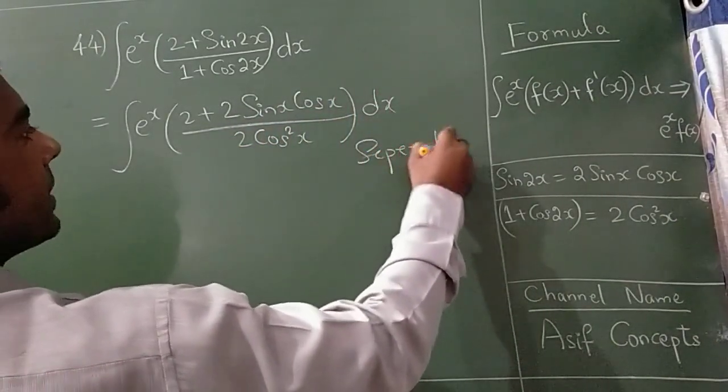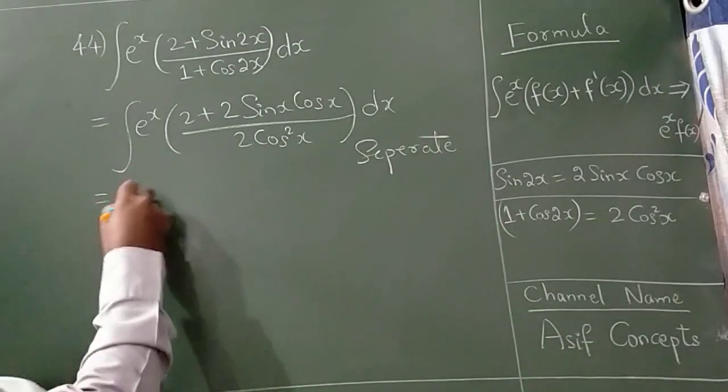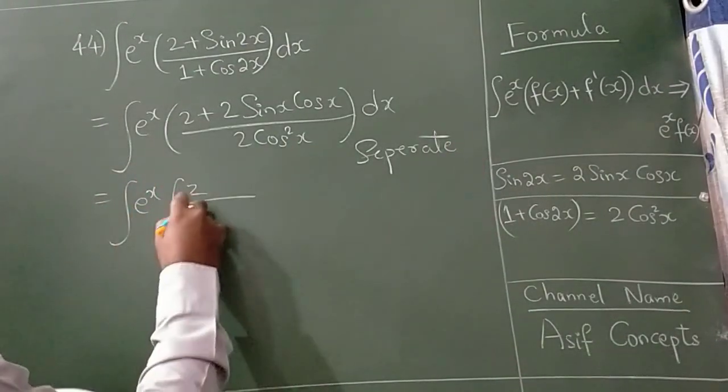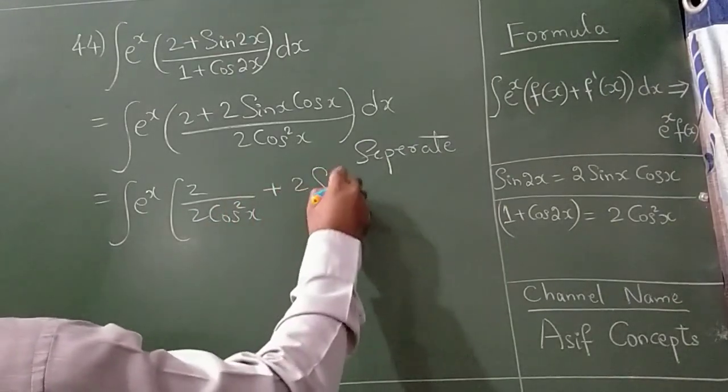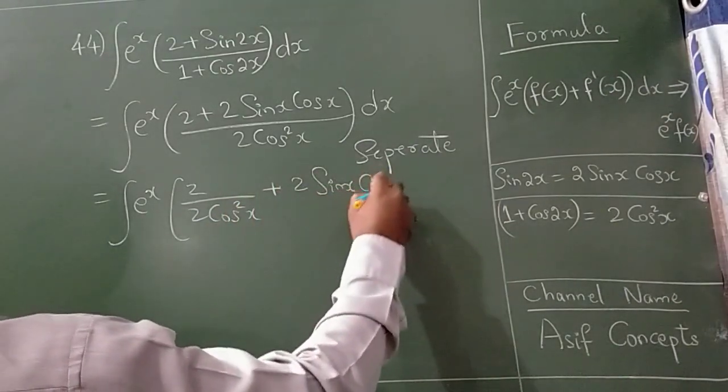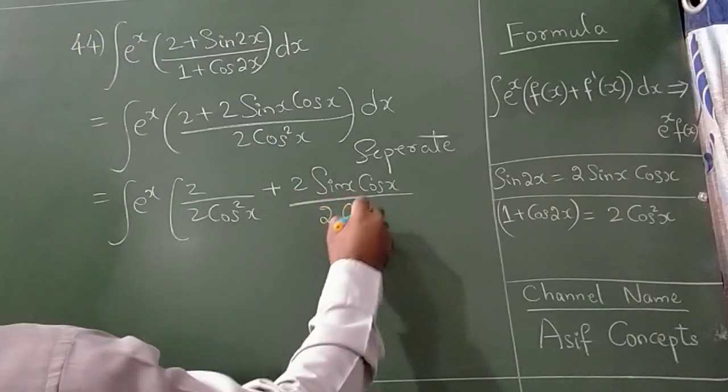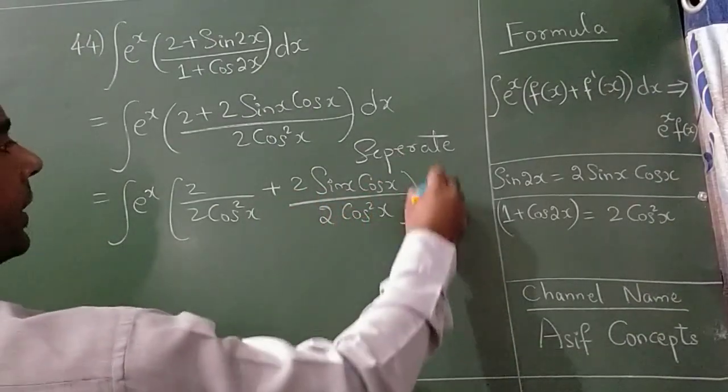Now I am going to separate this: e raise to x, 2 divided by 2 cos square x plus 2 sin x into cos x divided by 2 cos square x into dx.